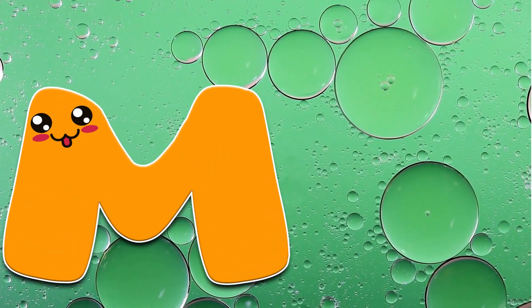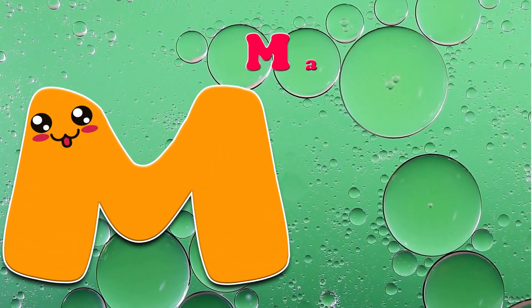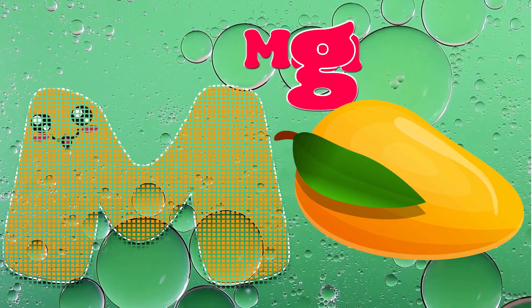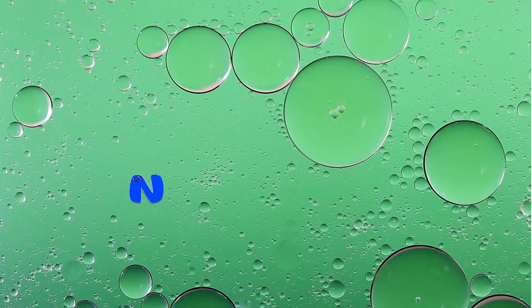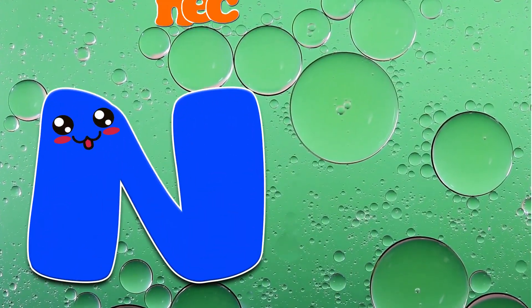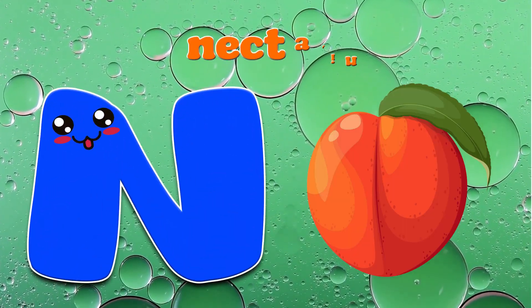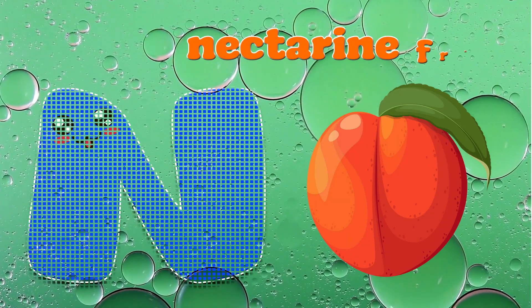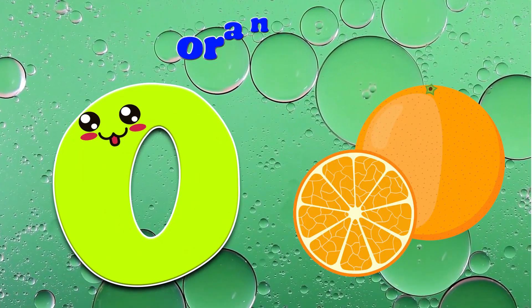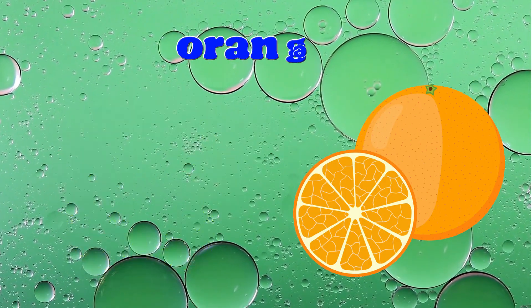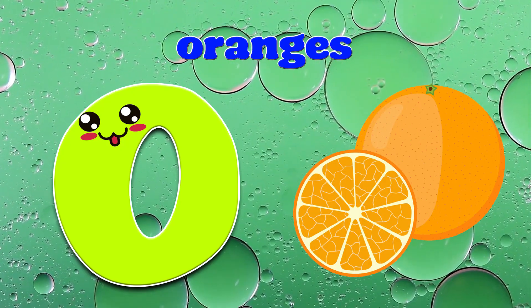M is for Mango. M. M. Mango. N is for Nectarine Fruit. N. N. Nectarine Fruit. O is for Oranges. O. O. Oranges.